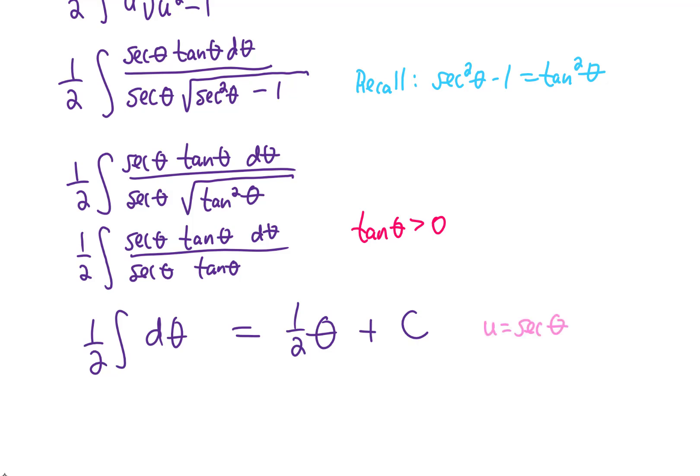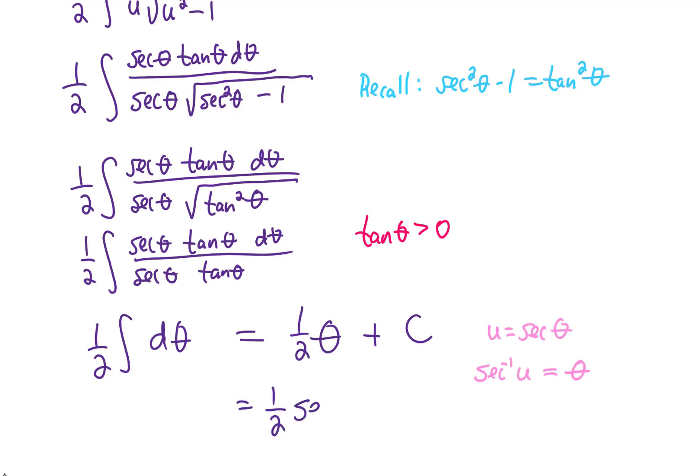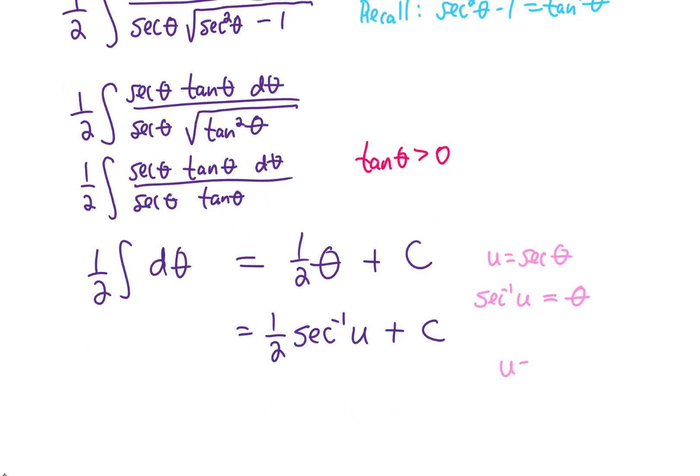Our theta substitution was this right here, and if we take an inverse secant of both sides, we get that theta equals the inverse secant of u. And looking all the way back to the beginning of this problem, you'll remember that u was x squared. So our final answer is going to be 1 half times the inverse secant of x squared plus c.